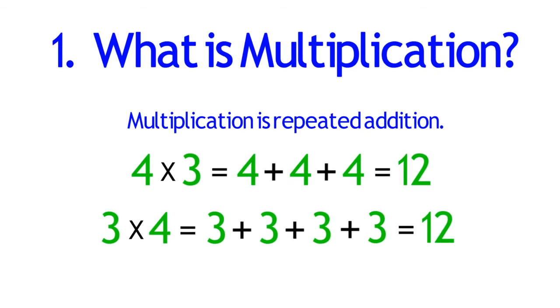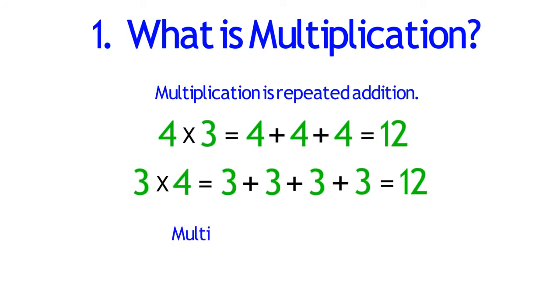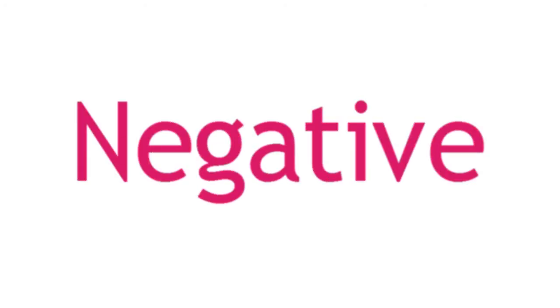This brings us to our next point about multiplication. Multiplication is commutative, which means that 4 times 3 equals 3 times 4. And this is true for any two numbers that you multiply. So now we want to take these two ideas and simply extend them to include negative numbers.